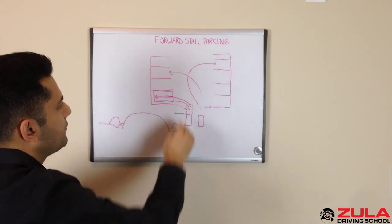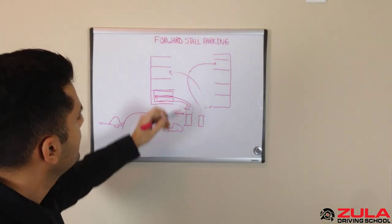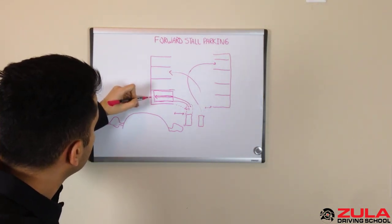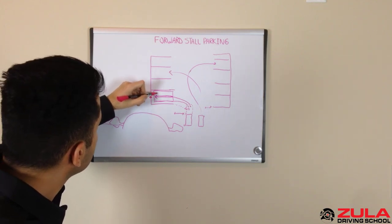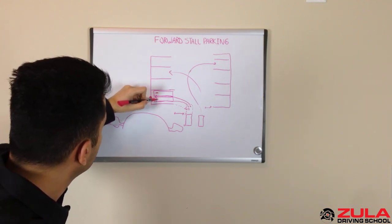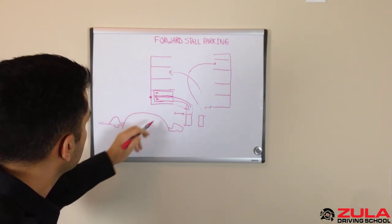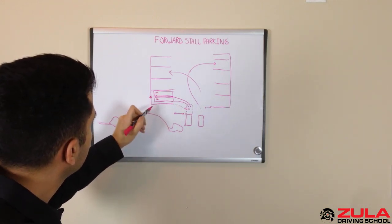Now once you're into your stall and you're looking to the front of your stall and you're seeing the center of the stall, that's when you want to straighten out your wheel and you want to go forward.